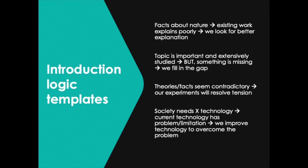A third template could be: theories or facts seem contradictory, and our experiments will resolve the tension. And finally: society needs X technology, current technology has this problem or limitation, and we improve the technology to overcome the problem. What you do with these templates is write out the information for your specific situation — filling in the facts about nature, about the existing work, about why the topic is important, and so on.